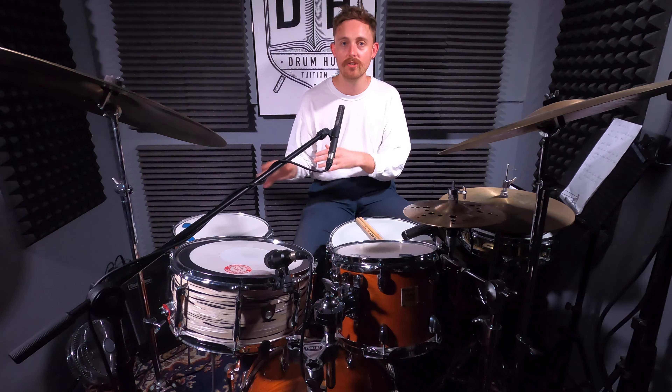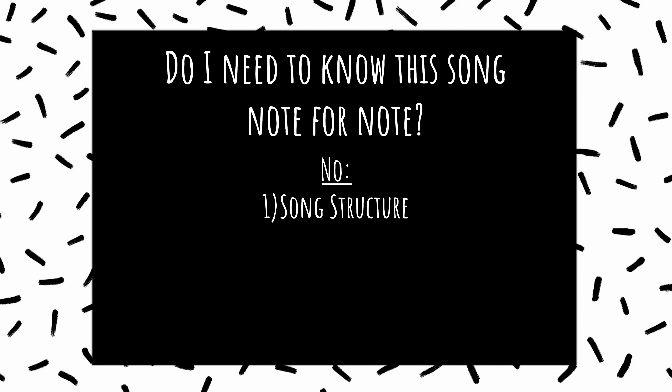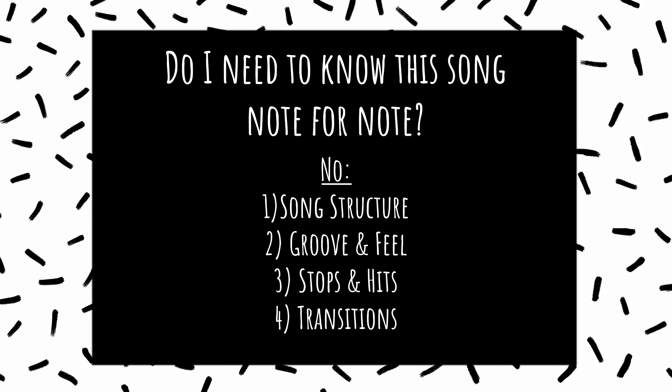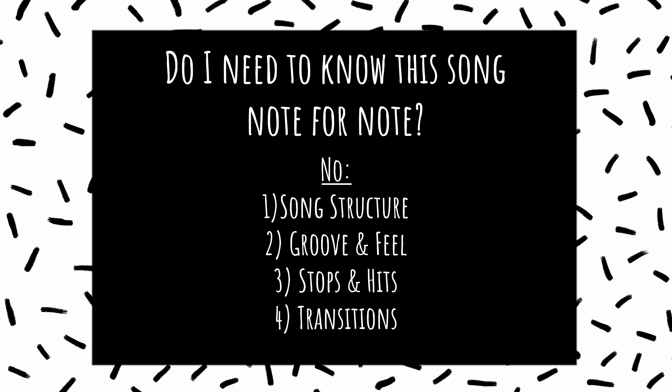First, knowing the order of the different sections of the track — does it go intro, verse, chorus, verse, chorus, middle eight, double chorus, or whatever it is. Second, how many bars are in each section. Then I'm thinking about what feel each section has, any stops or hits, and the transitions from one section to another.